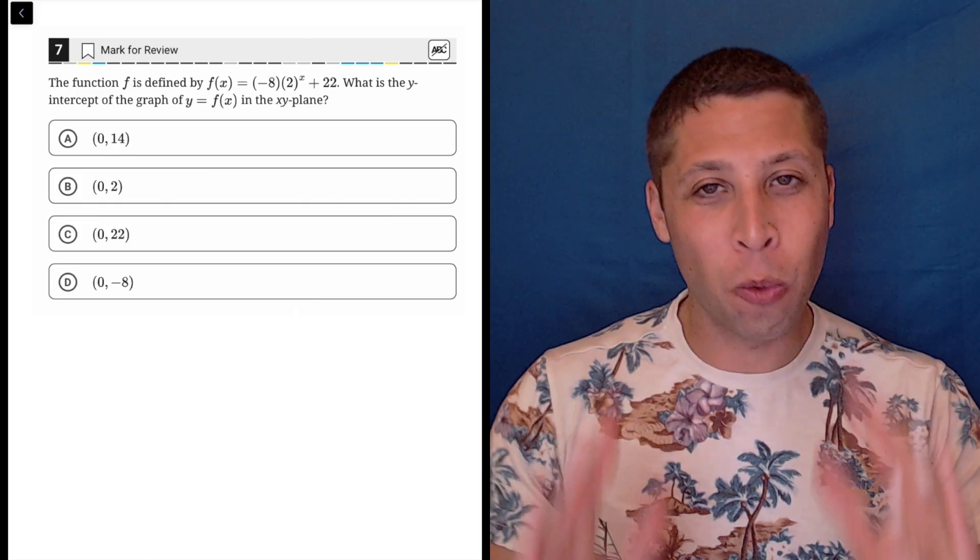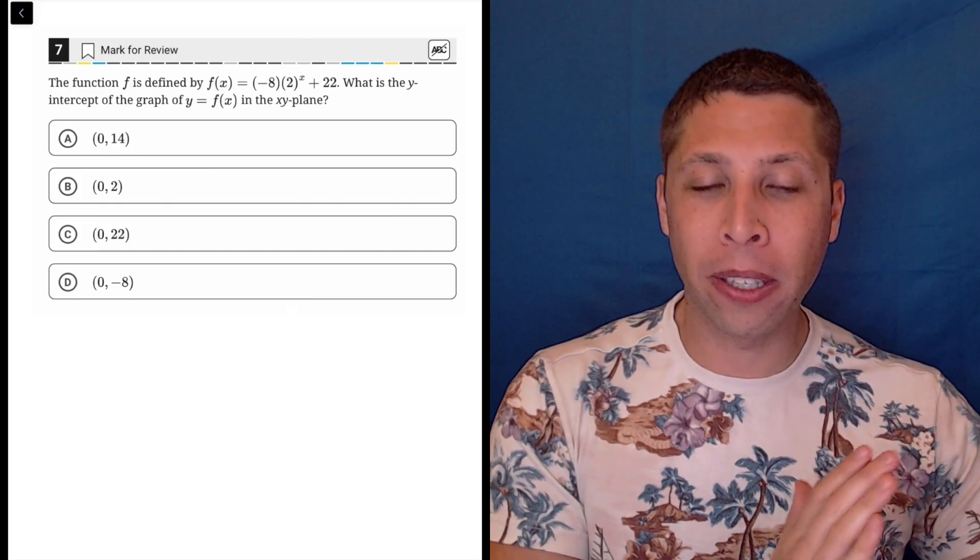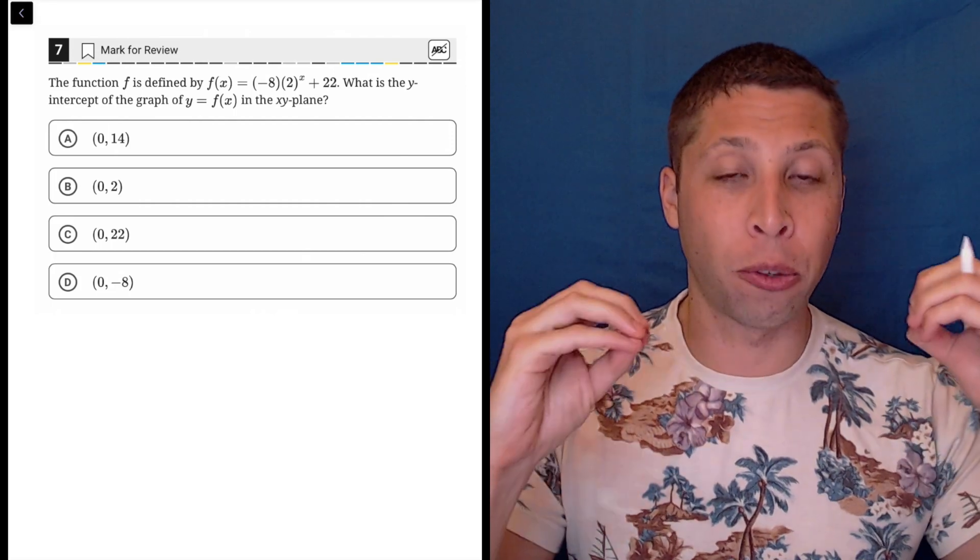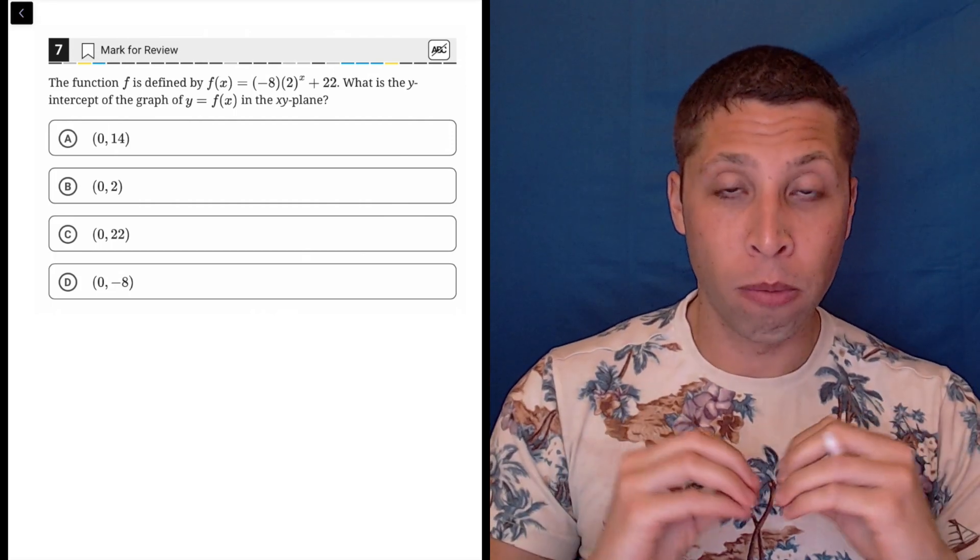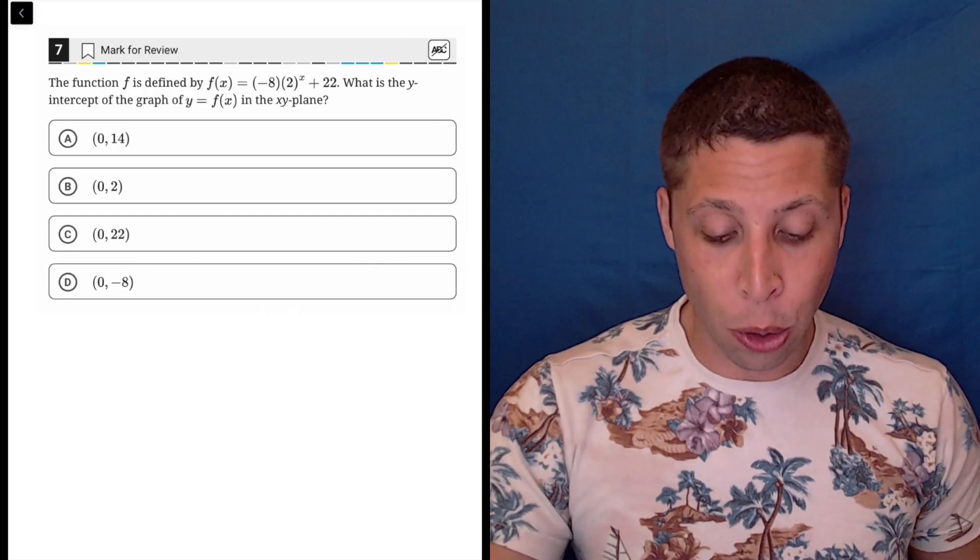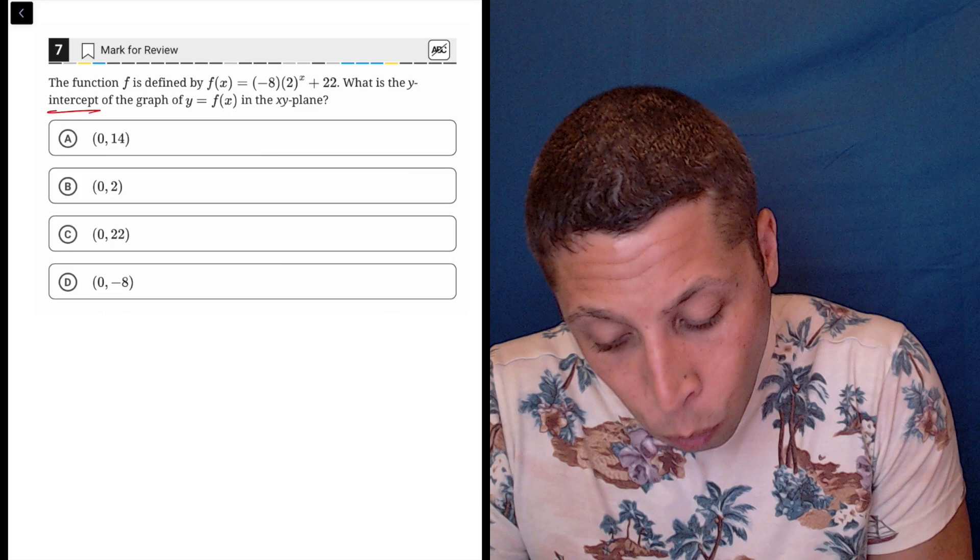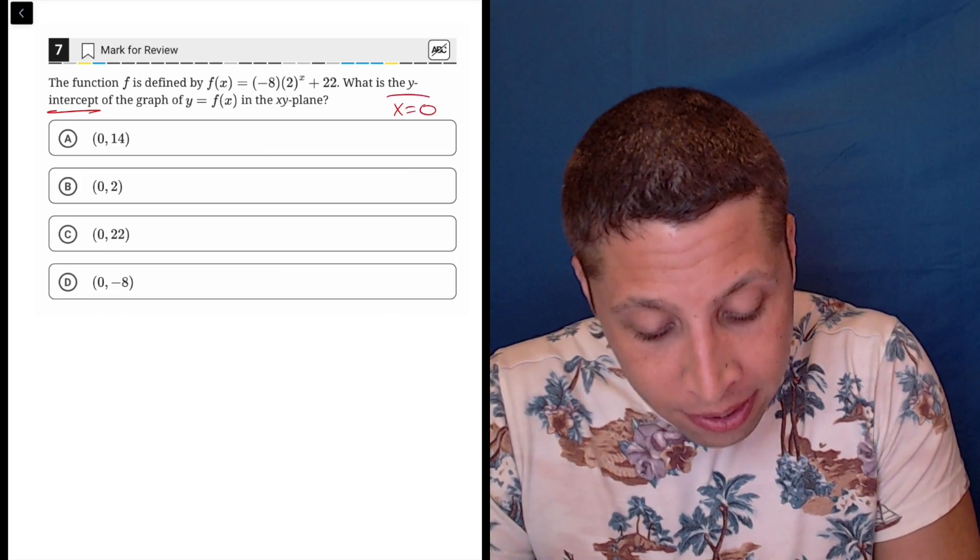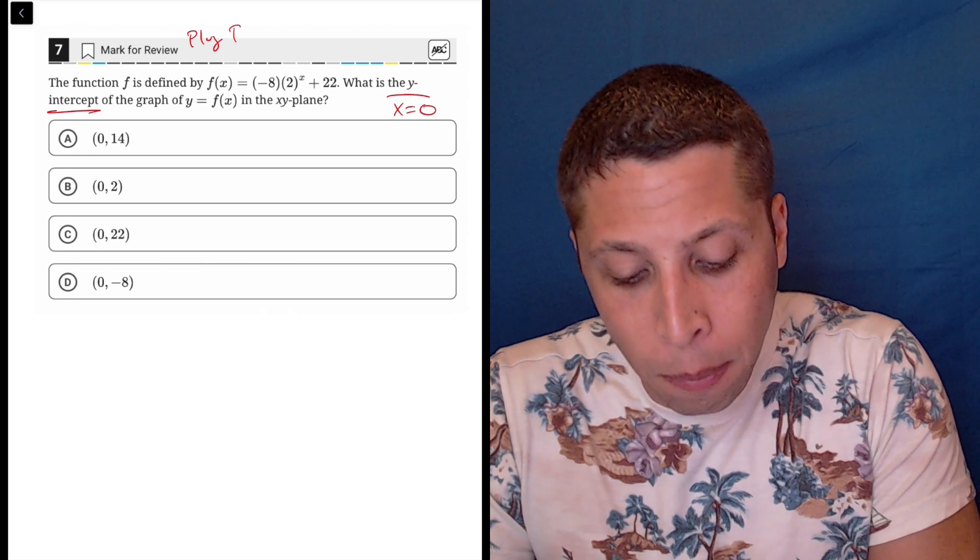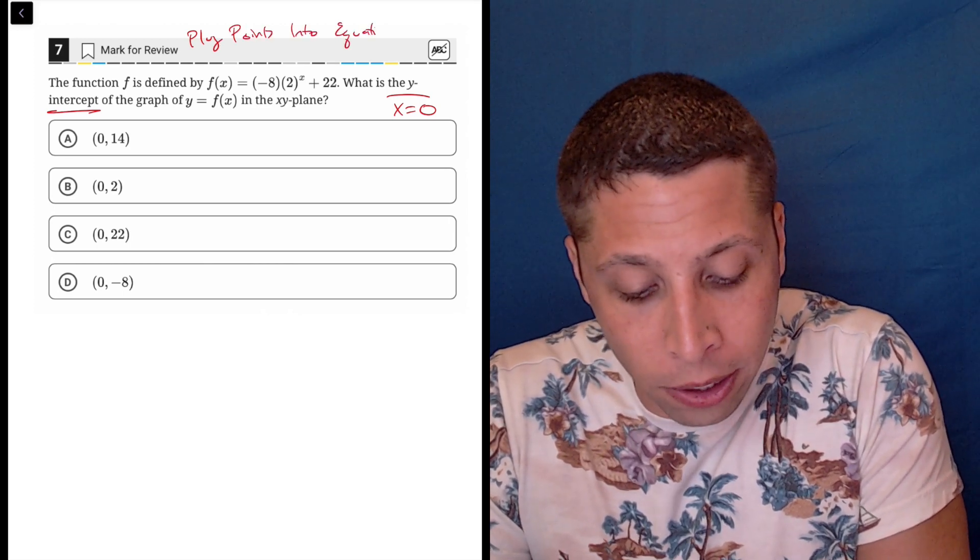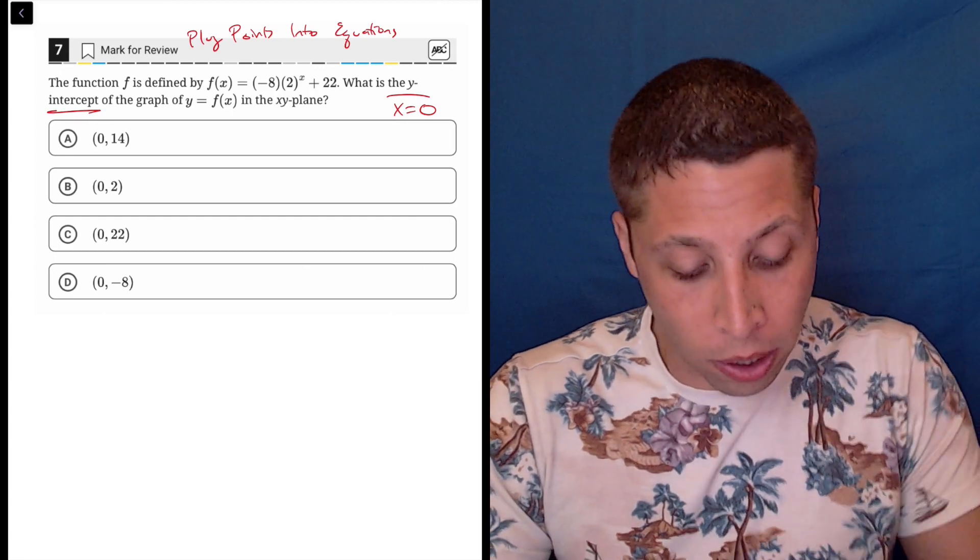This question is why you should avoid algebra, avoid algebraic thinking, and always try to prove your answers with real numbers. It's very easy to do. Let's start with what you're supposed to do. You're supposed to find the y-intercept, which means we know that x equals zero. So we can plug points into equations. We're clearly given an equation and clearly given a point.